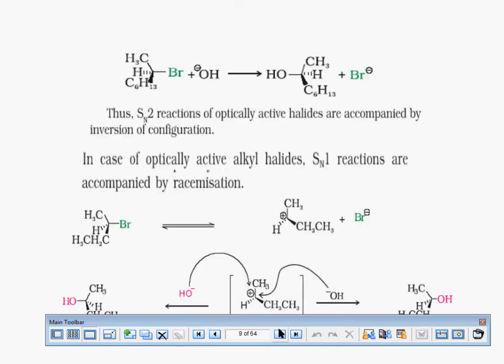Tell me what optical activity is first of all. Substances which can rotate the plane of polarized light are optically active. So there are two kinds of substances: one which can rotate the plane of polarized light towards right, one which can rotate the plane of polarized light towards left.